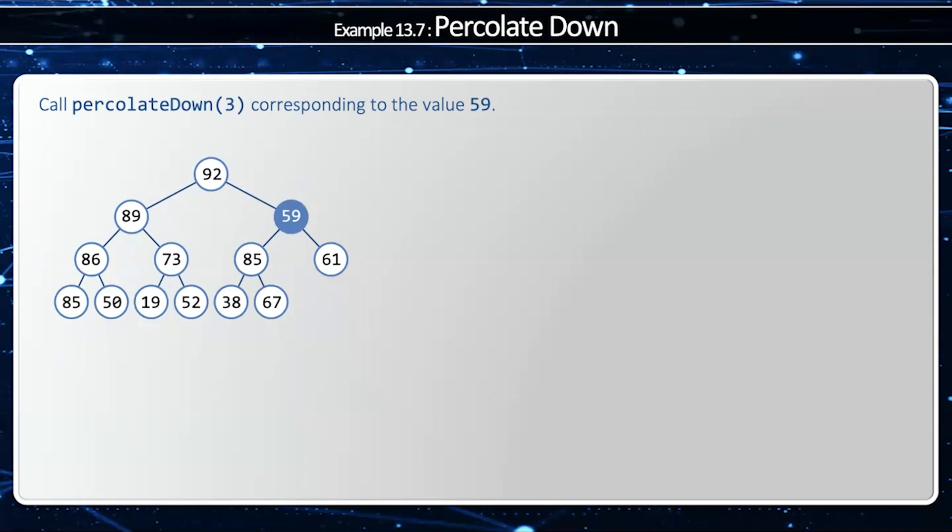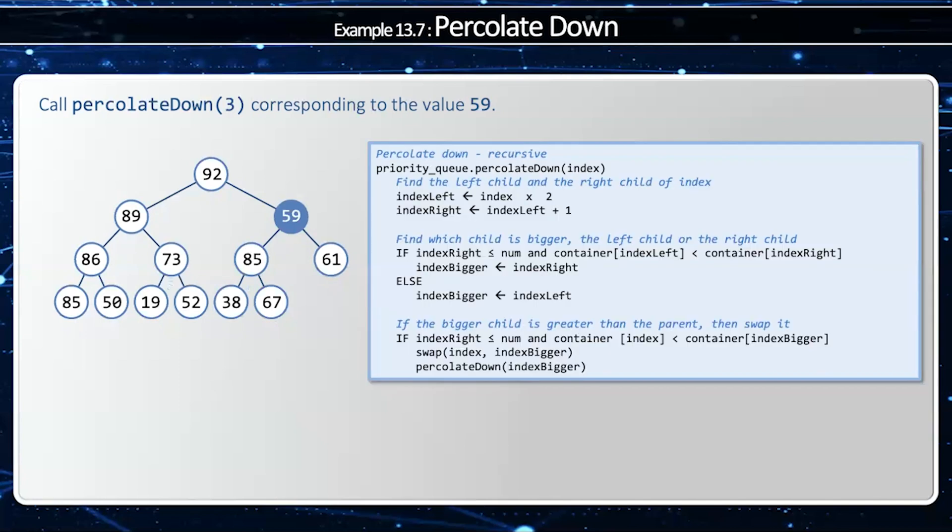We're going to call percolate down at index three. So here's my heap. I'm going to remind myself of my algorithm, and then I'm going to draw my indices down. Now, I'm going to compute my left and right index. Since my index is three, my left index will be six. My right index will be seven.